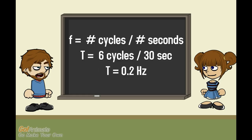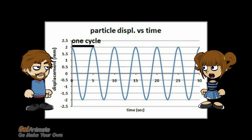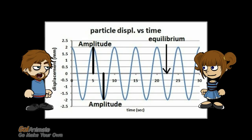To find the frequency, everything is flipped — frequency is the number of cycles divided by the time it took. Amplitude is the maximum displacement of the particle. Notice that the particle moves the same amount, 2 mm in this example, from the equilibrium position in either direction.